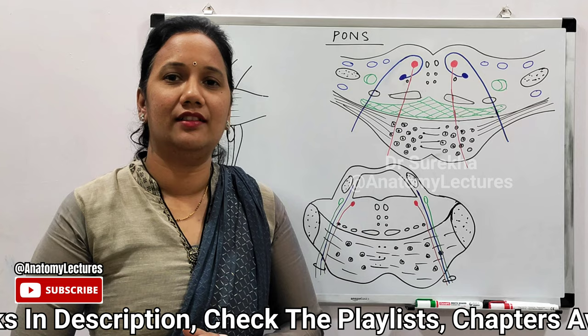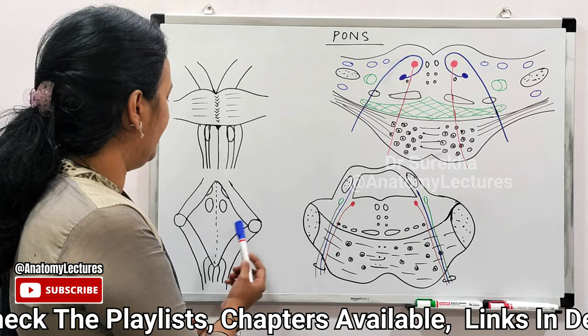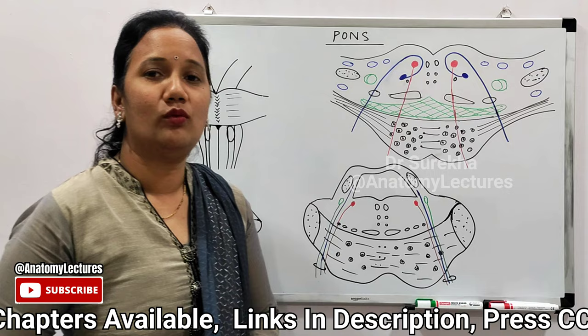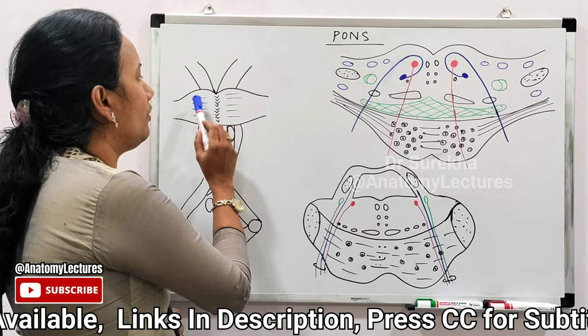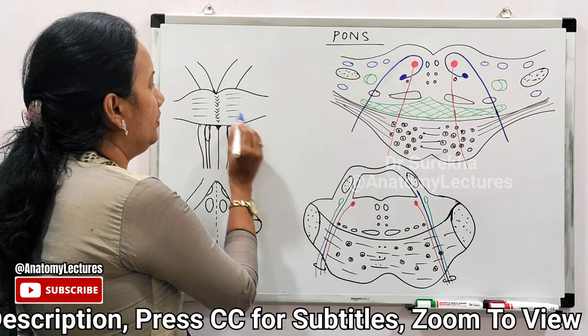The presenting parts of pons: it has got two surfaces — the ventral surface and the dorsal surface — and two borders: the superior border and the inferior border. The ventral surface of the pons is convex in shape.